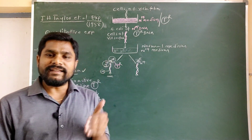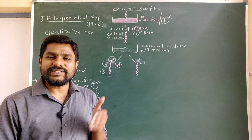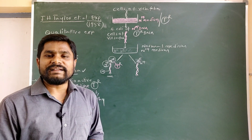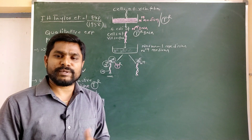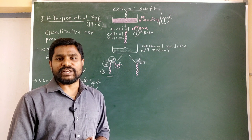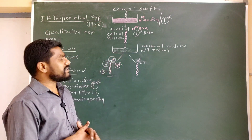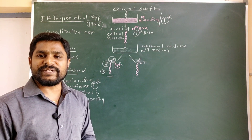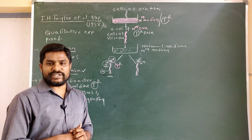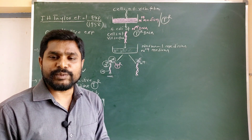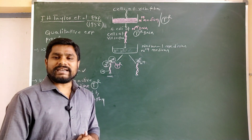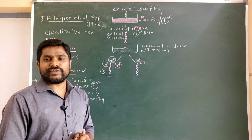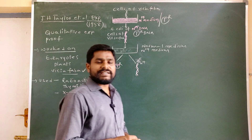As the generations proceed from first to last, Meselson and Stahl found that there is a decrease in hybrid DNA content or N15 DNA content, and based on that they provided a quantitative experimental proof for the semi-conservative model of DNA replication. Likewise, J.H. Taylor and his group also found that there is a gradual decrease in the intensity of radioactivity as generations proceed, and so they provided a qualitative experimental proof for the semi-conservative model of DNA replication, because the experiment is based on the decrease in the intensity of radioactivity.